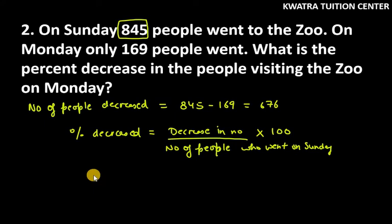Percentage decrease we need to find. Decrease in number 676. Number of people who went on Sunday, it was 845.